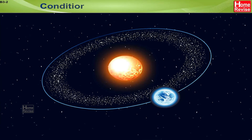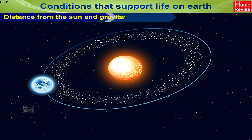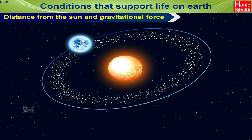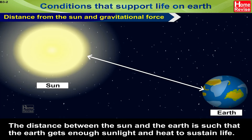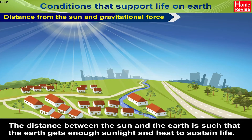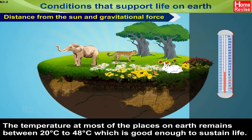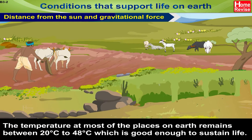Conditions that support life on Earth: Distance from the Sun and Gravitational Force. The distance between the Sun and the Earth is such that the Earth gets enough sunlight and heat to sustain life. The temperature at most places on Earth remains between 20 degrees Celsius to 48 degrees Celsius, which is good enough to sustain life.